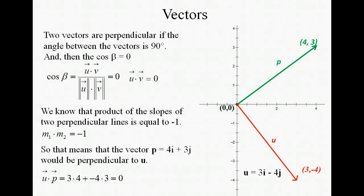Looking at the dot product, you can verify or prove that the two vectors are perpendicular because the dot product is equal to 0, which means that the cosine of the angle is 0, so the angle must be 90 degrees.